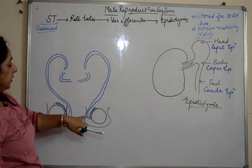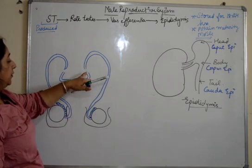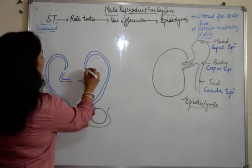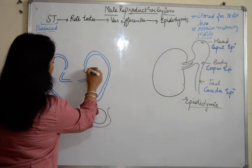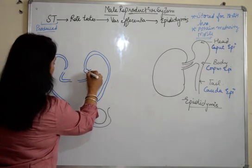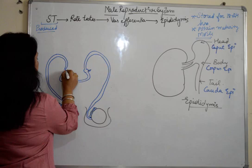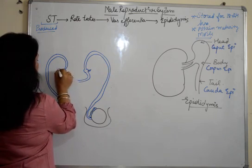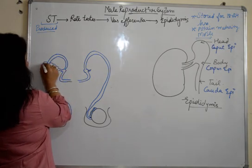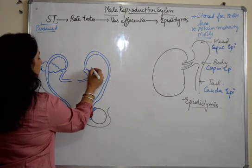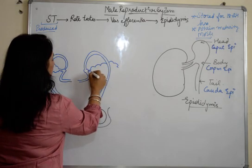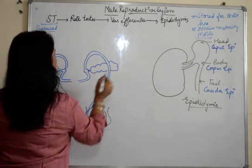So we have the scrotum, the testes, epididymis, then the vas deferens which becomes coiled and starts moving upward. Here we have left space for the bulged part known as the ampulla, from where the accessory gland — the seminal vesicles — arises. This accessory gland is present on both sides.